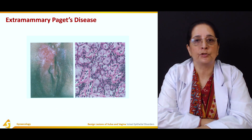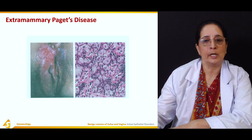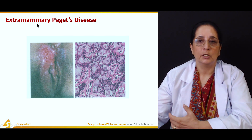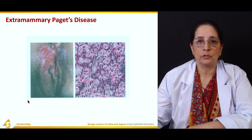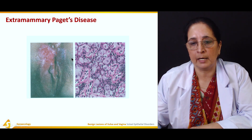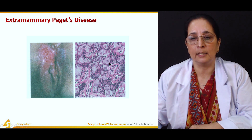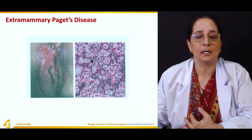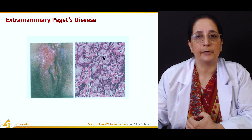Another condition is extramammary Paget's disease. Paget's disease of the breast is very common, so this is called extramammary — meaning other than the breast tissue. It is diagnosed by histology on microscopic examination, showing whitish shiny scaly lesions. Paget cells are present, which have a large center, clear cytoplasm, and an eccentric nucleus on the side. Diagnosis is confirmed by the presence of Paget cells.